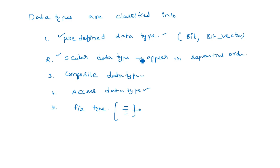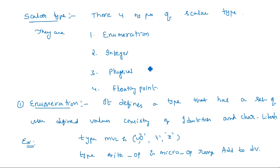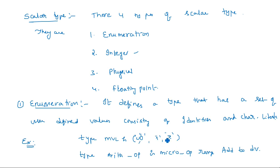Scalar data types are again classified into four different types: enumeration data type, integer data type, physical data type, and floating point data type. Floating point represents values in terms of decimals like 1.9, 2.9, and integer represents values in terms of integers within a range. Physical data type represents physical quantities we can measure like current, voltage, power, and time. Enumeration data type is simply a data type consisting of a group of mixed, user-defined values like U (undefined), 0, 1, Z - a set of user-defined values put together.